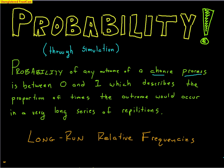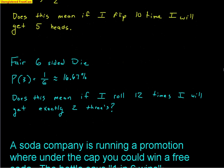Probability describes the proportion of times the outcome would occur in a very long series of repetitions. The key thing to keep in mind is that probability is the proportion of times that an outcome will occur over the course of a very long series of repetitions. Probability actually gets a special name in this class called long-run relative frequency. Relative meaning percent of outcomes, frequency is your count — so it's the percent of counts that happen in the long run.